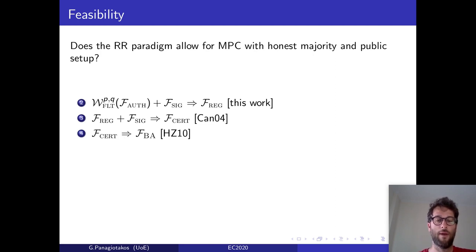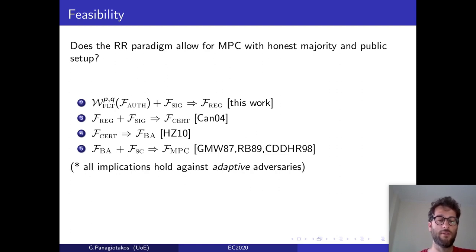Then, due to a paper from Hirt and Zikas in 2010, we can implement the broadcast functionality, starting from the certification functionality. And finally, due to a paper from Cramer, Damgård, Dziembowski, Hirt and Rabin in 1998, we can implement the MPC functionality, starting from broadcast in the secure channels model. Now, all these implications hold against adaptive adversaries, hence all our results are against adaptive adversaries.